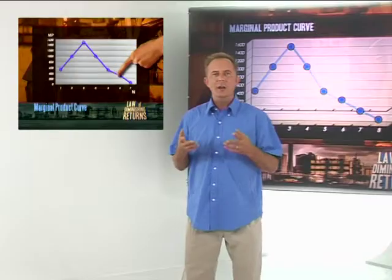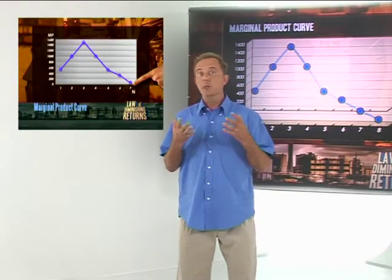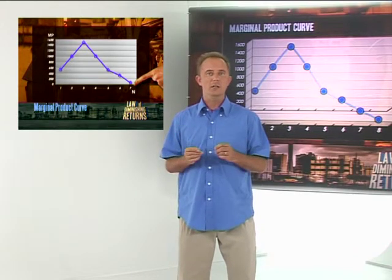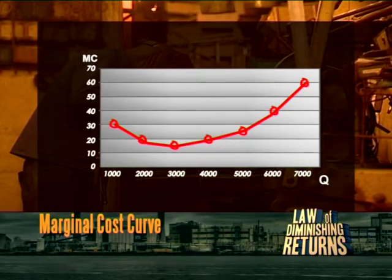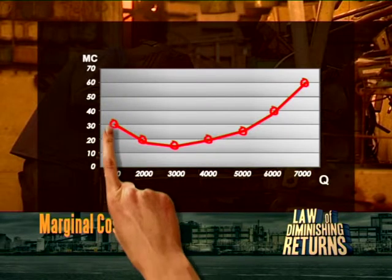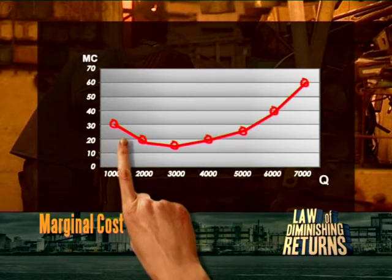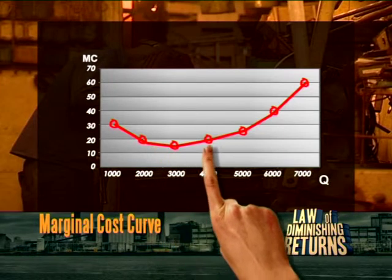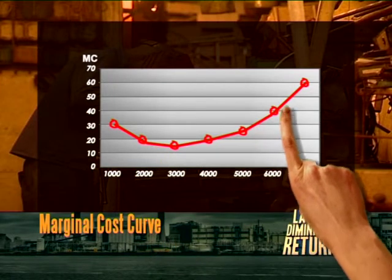Let's see how this marginal product curve relates to the marginal cost curve. The marginal cost curve shows us the other side of the same coin. It tells us what happens to the cost of producing each additional unit. It first decreases, reaches a minimum and then costs start to increase.